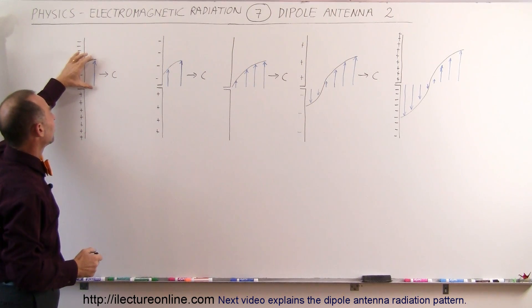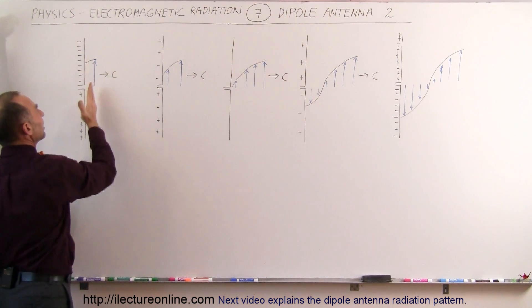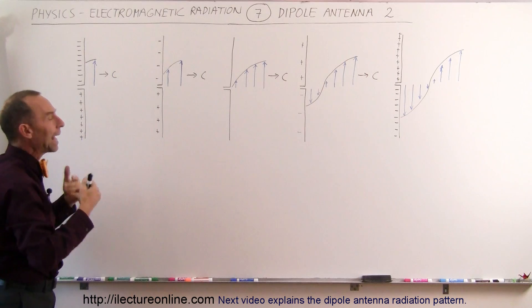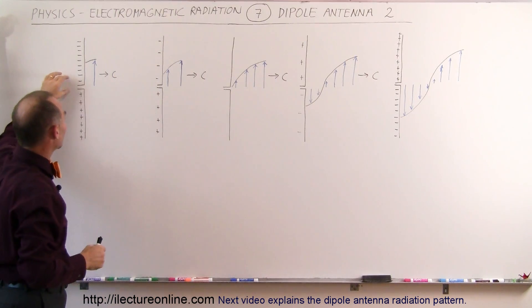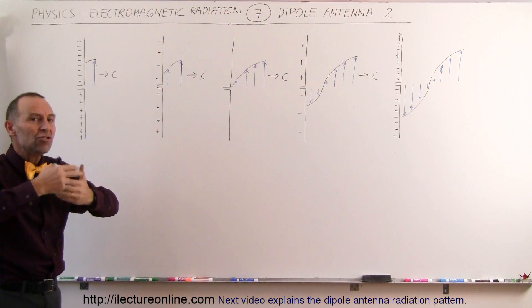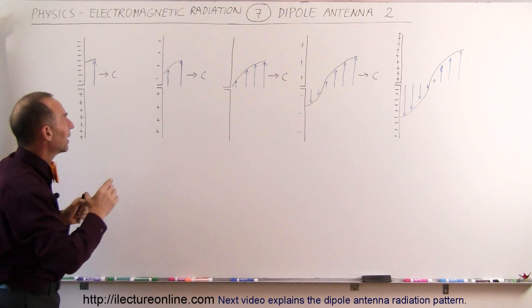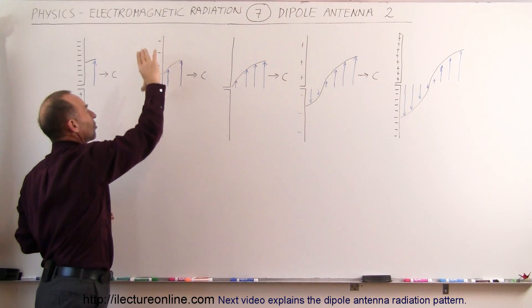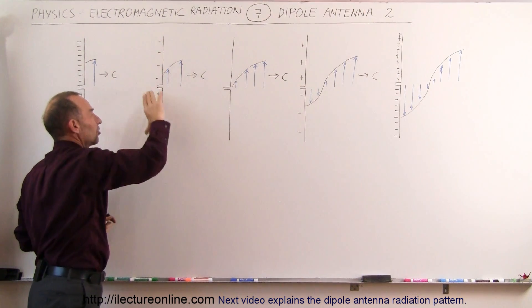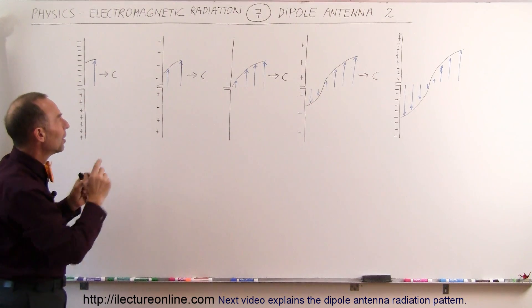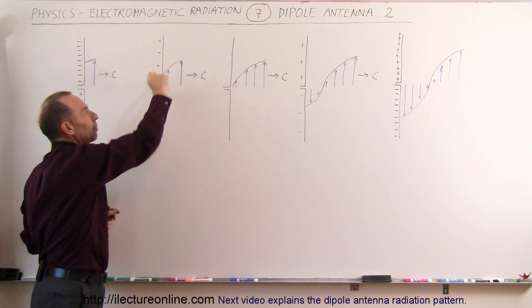You can see there'll be an electric field in the upward direction at this moment, but as the electronics of the antenna starts to change the polarity of that antenna so that there's less and less charge at the top, and less negative charge at the top, and less positive charge at the bottom, you can see that the strength of the electric field begins to diminish.